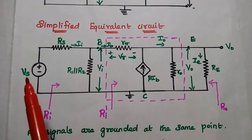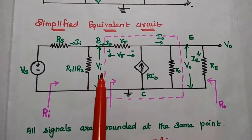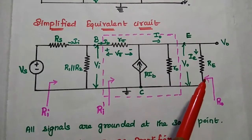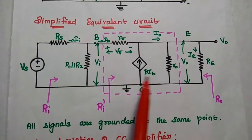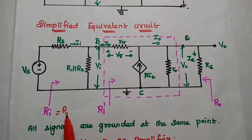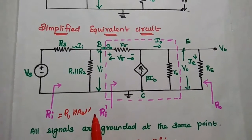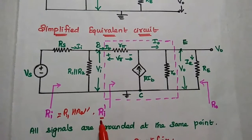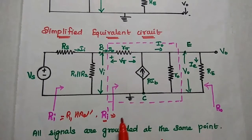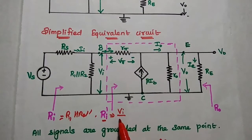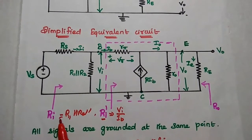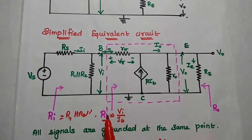Vs is the actual source voltage signal. Vi is the input voltage to the transistor. Vo is the output across the Re resistor. The overall input resistance is Ri, which is equal to R1 in parallel with R2 in parallel with Ri dash. Ri dash is the input resistance to the transistor circuit, defined as Vi divided by Ib. The overall input resistance is therefore R1 parallel R2 parallel Ri dash.